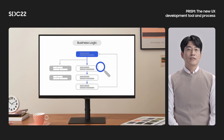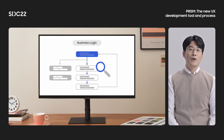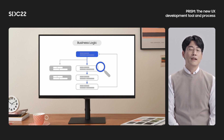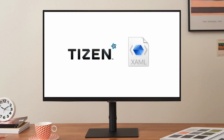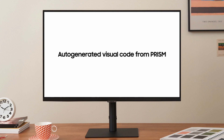Beginning this year, UX designers have been releasing PRISM codes to software developers, and my team has been working to transfer this code to Tizen-based products. NUI is a C-Sharp UI framework of the Tizen platform. Our NUI application is structured to manage UI visual and business logic separately. The PRISM code for Tizen NUI is delivered as UIScript format. Here's a demo of PRISM development based on Tizen NUI.